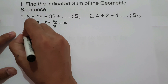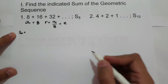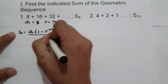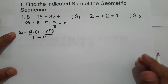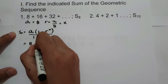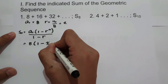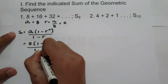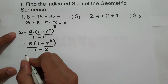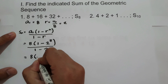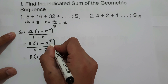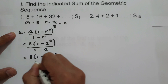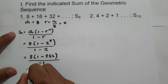We are using the formula S sub n equals a sub 1 times (1 minus r raised to n) all over (1 minus r). So a sub 1 is 8, times (1 minus 2 raised to 8), all over (1 minus 2). We have 8 times (1 minus 2 raised to 8), and 2 raised to 8 is 256, all over (1 minus 2), which is negative 1.